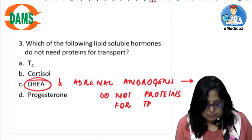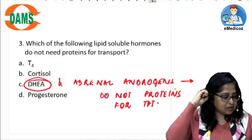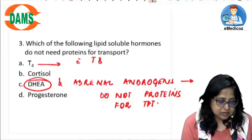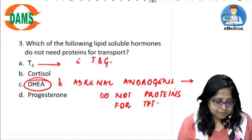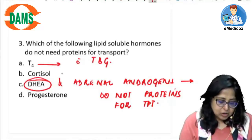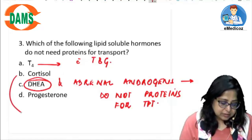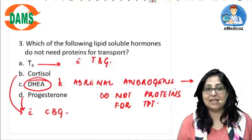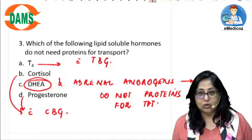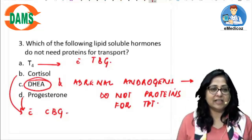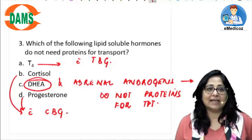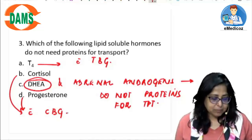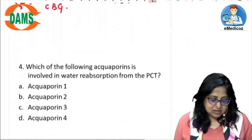Which are the common transport proteins? T4 is mainly transported along with TBG — thyroid binding globulin. Cortisol and progesterone are both transported with cortisol binding globulin. So T4 uses thyroid binding globulin, while cortisol and progesterone use cortisol binding globulin.